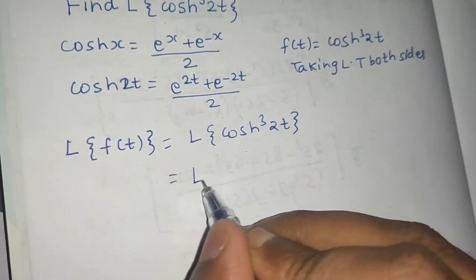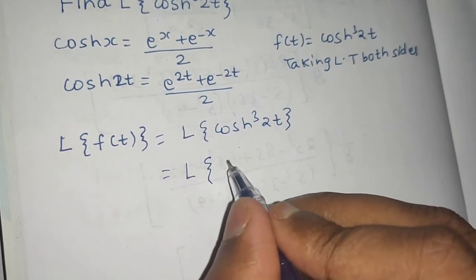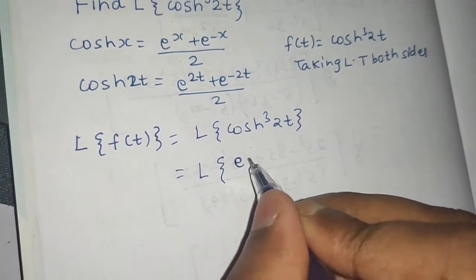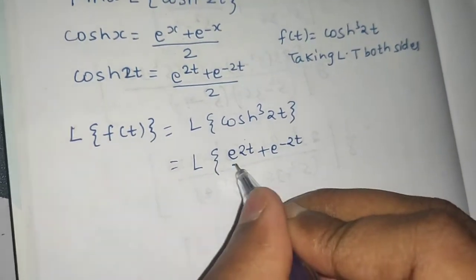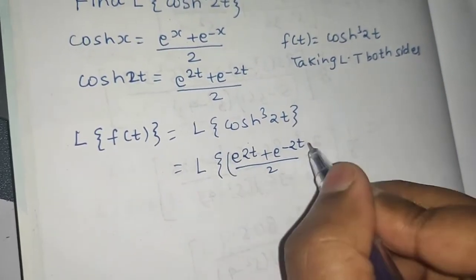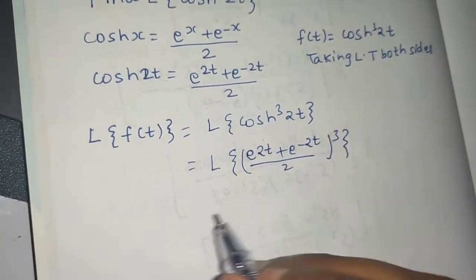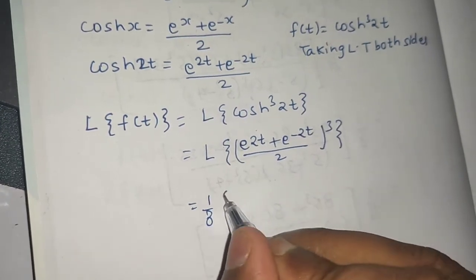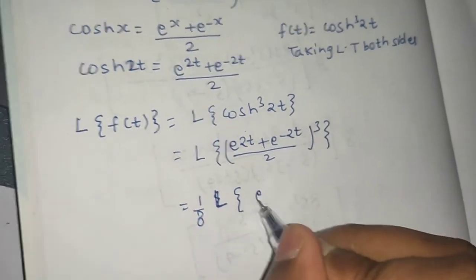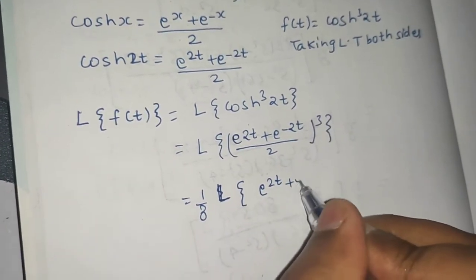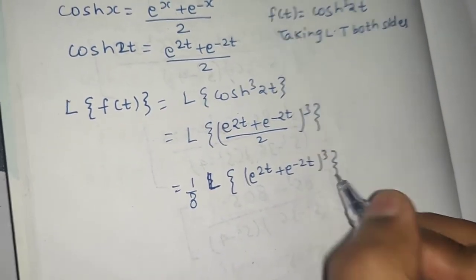We can write this as the Laplace of (e power 2t plus e power minus 2t divided by 2) the whole cube. A constant can be taken out, so 1 by 8 comes out, leaving the Laplace of (e power 2t plus e power minus 2t) the whole cube.